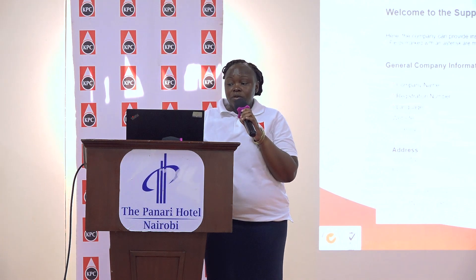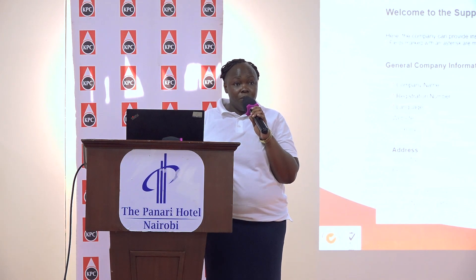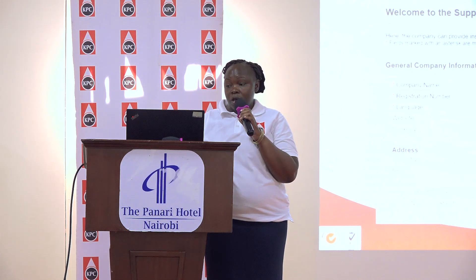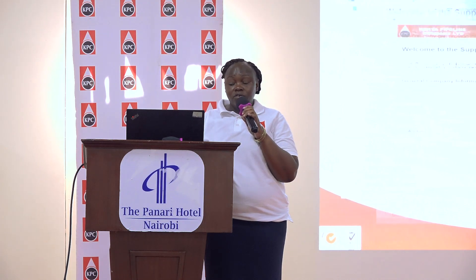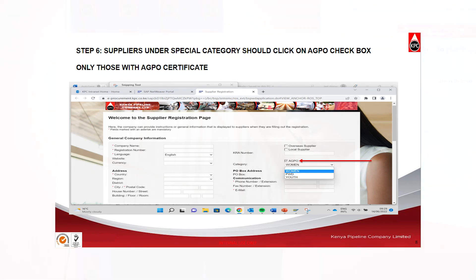Then you will select which category you belong to. If you belong to the AGPO category, you'll select the AGPO checkbox and then select one of the categories you belong to — whether it is women, youth, or PWD.